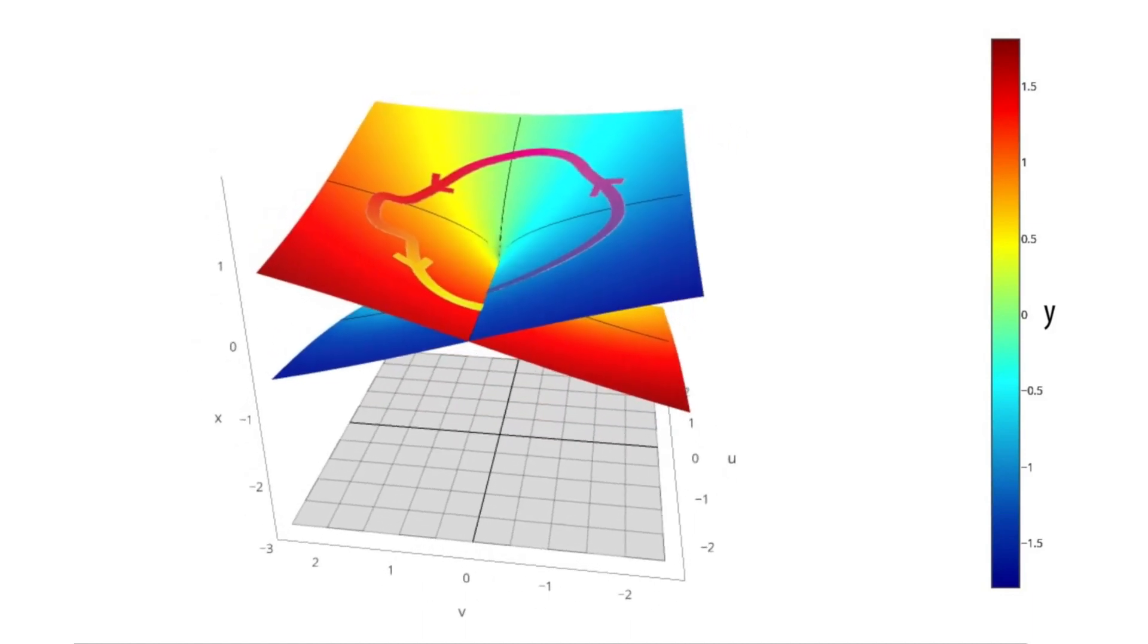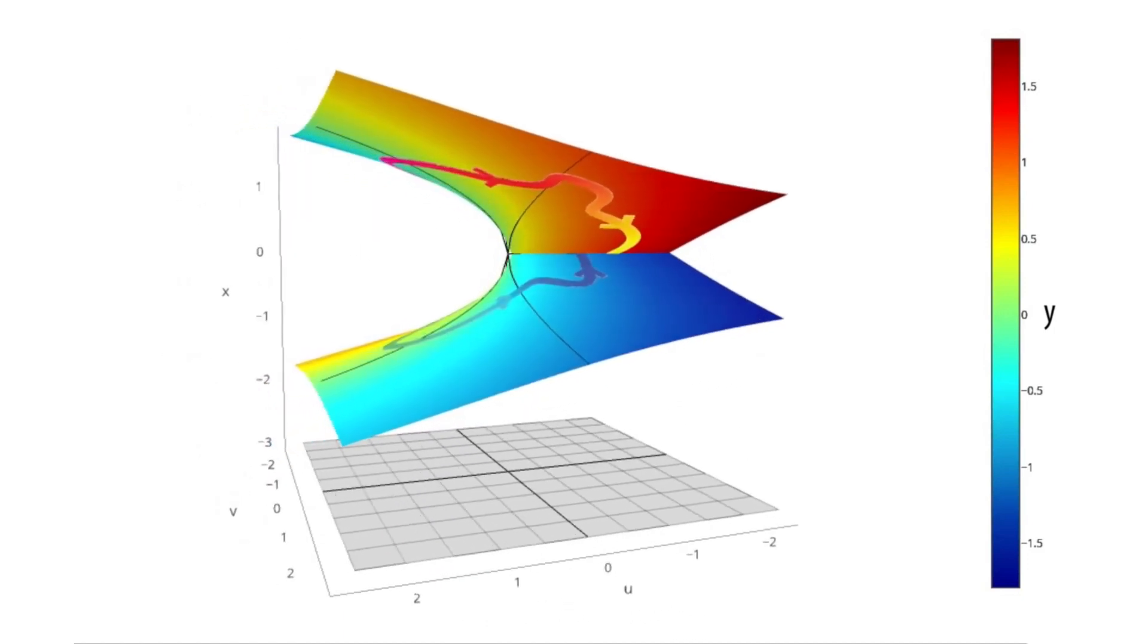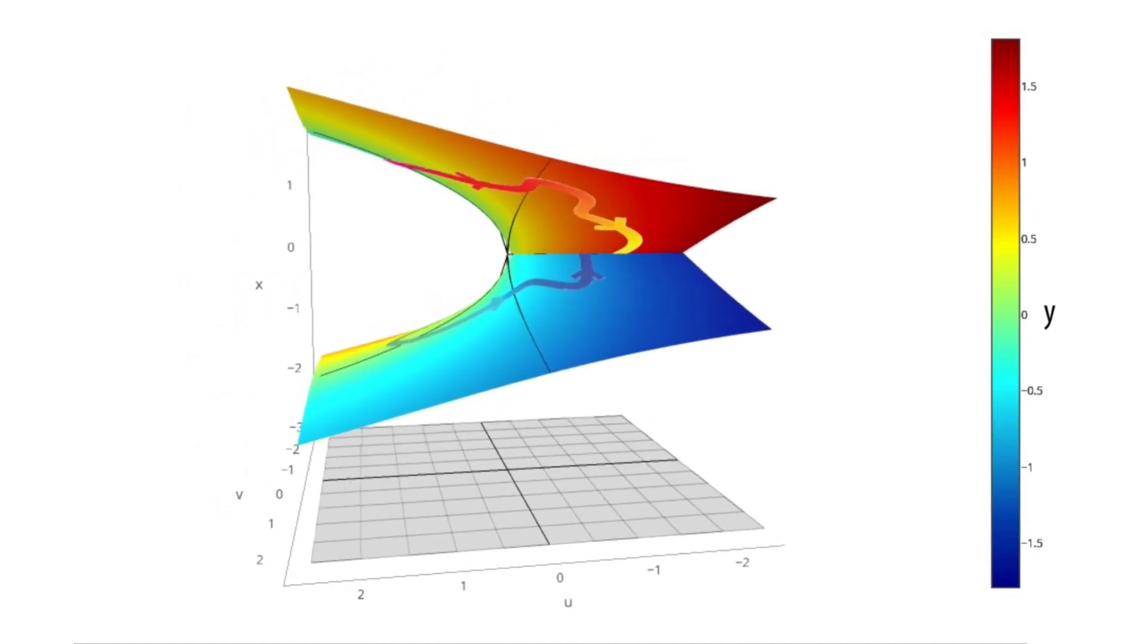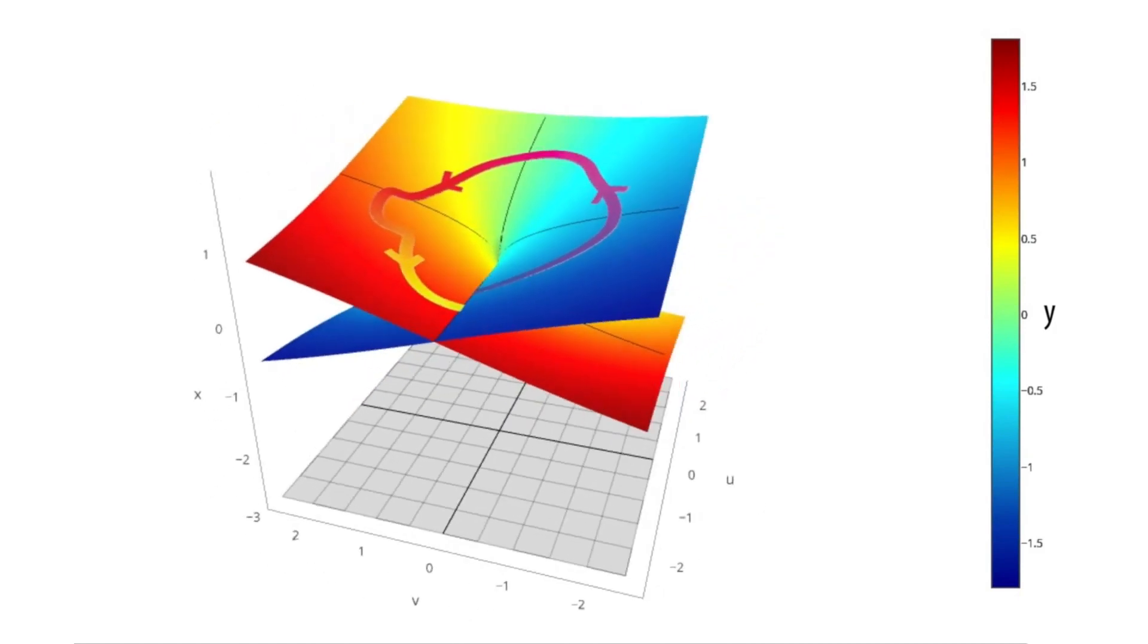Now with the help of the color map, it is much more clear that the apparent self-intersection isn't actually there, and we were only seeing that because we were visualizing a 4D space into three dimensions.